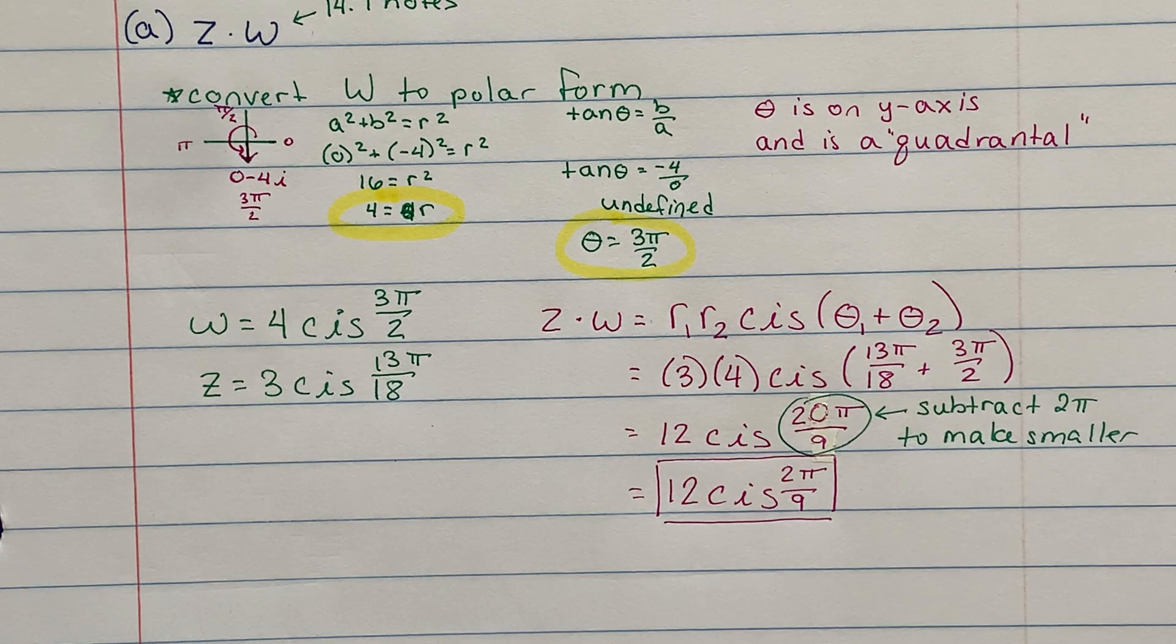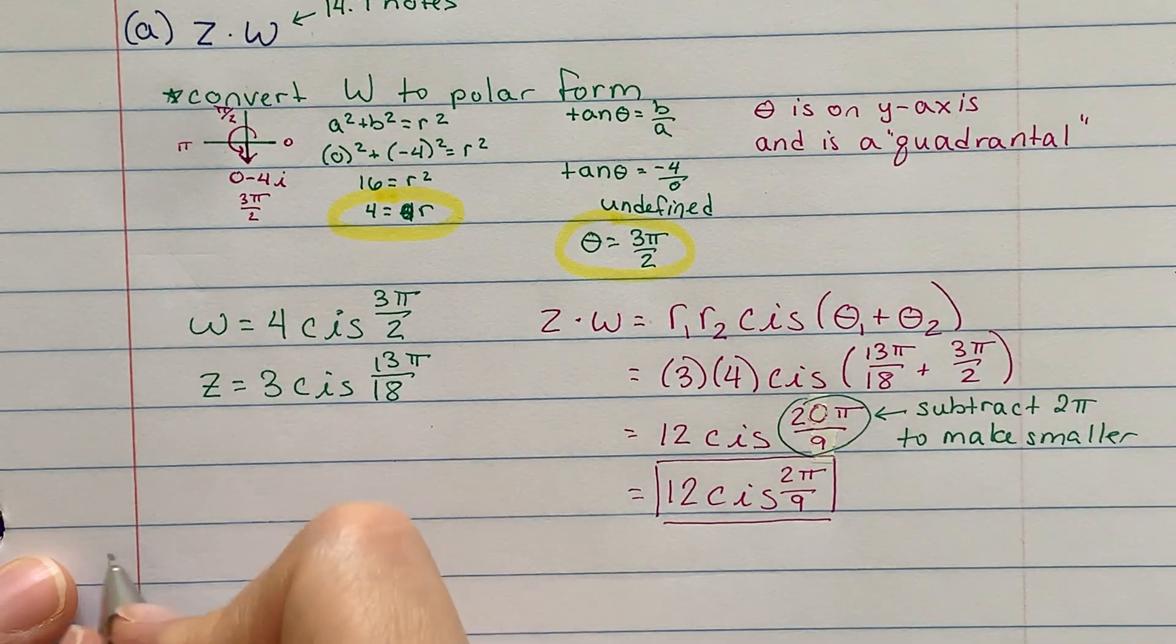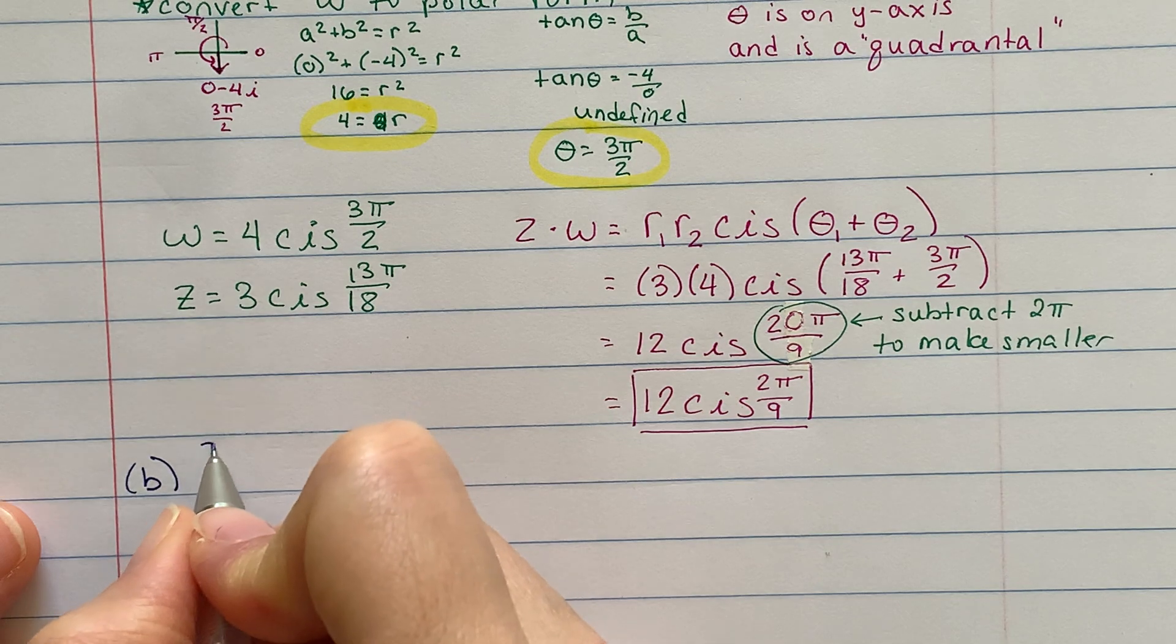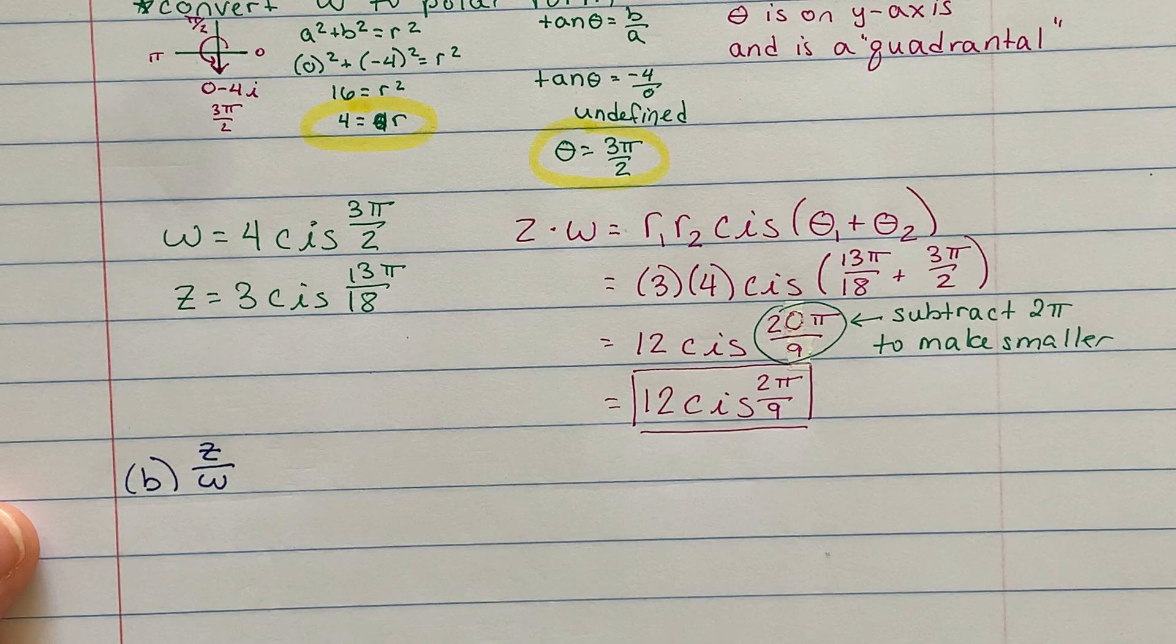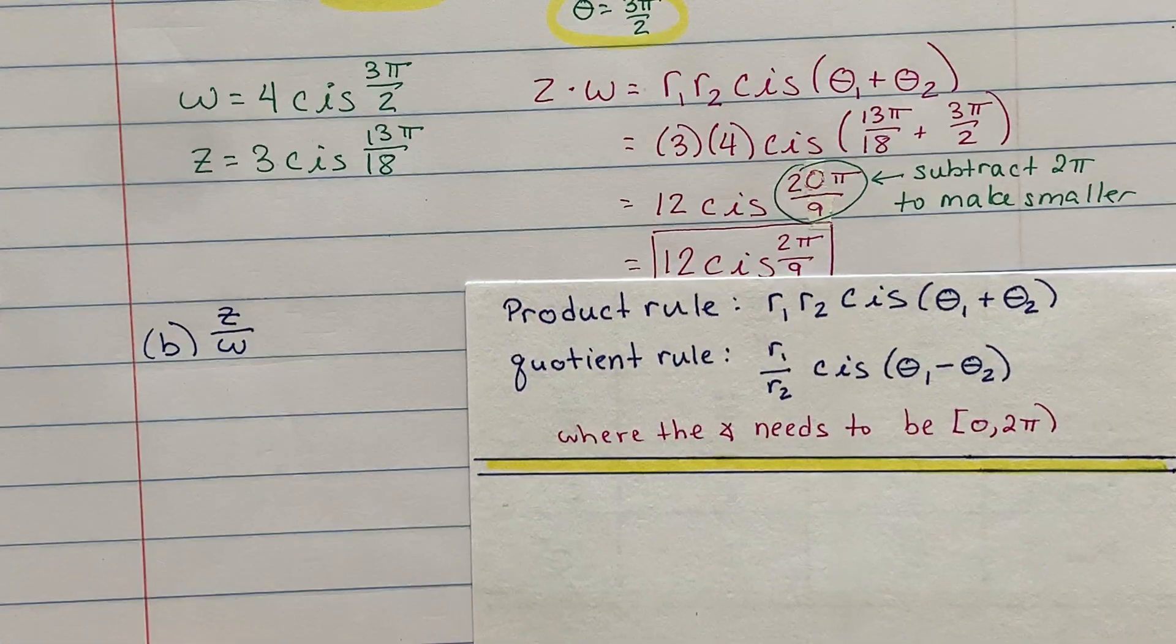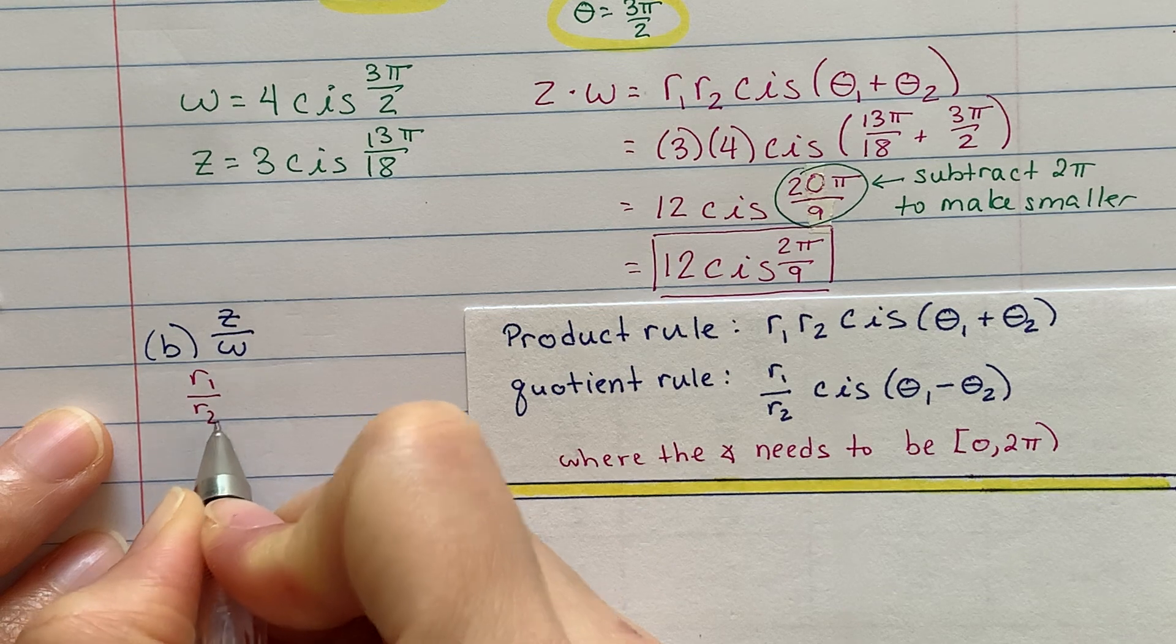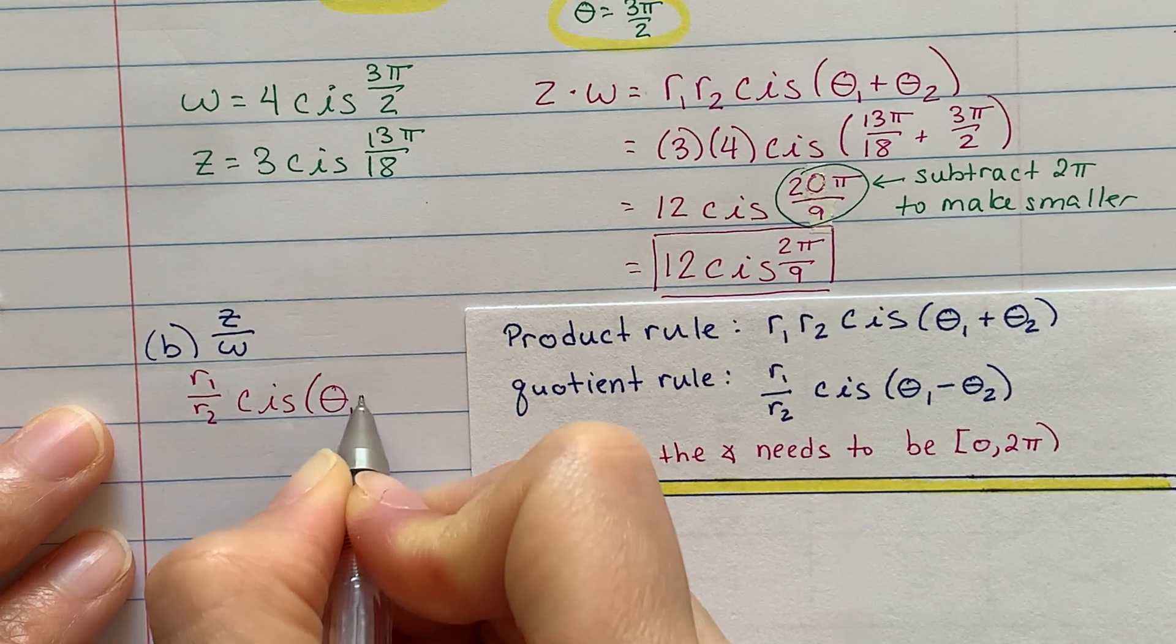So that was part A to find the product, and again, I just wanted to practice an example from yesterday to make sure that you're really understanding yesterday's concept. It was a really tough concept. And now for part B, I still want to practice yesterday's concept and do Z divided by W.